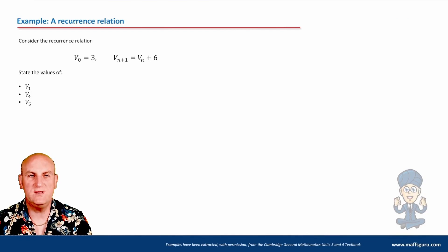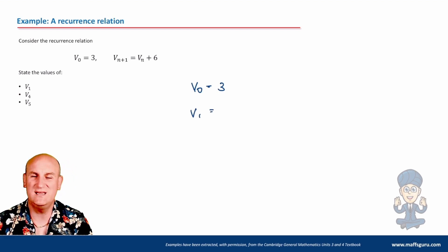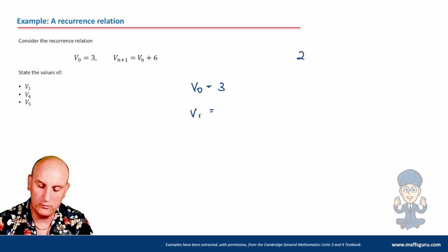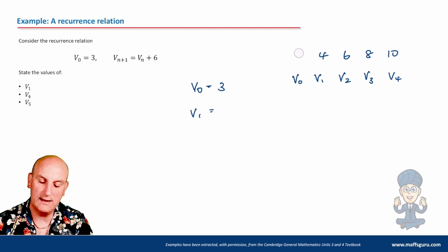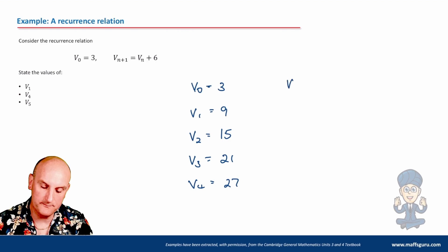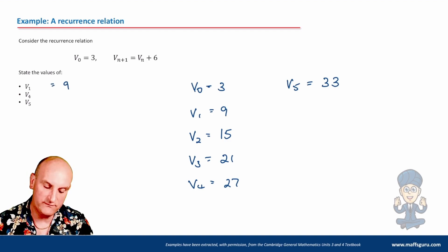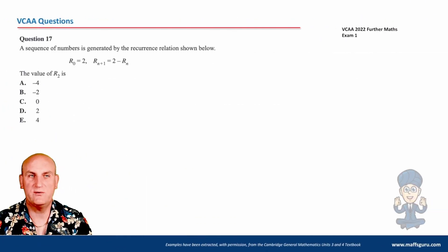Consider the recurrence relation shown. State the values of V1, V4, and V5. We've got V₀ equal to 3. Each term has a number — so if I've got the sequence 2, 4, 6, 8, 10, that would be V0, V1, V2, V3, V4. V1 is the next number in the sequence. Take the current number and add 6: that's 9. Then V2 is 15, V3 is 21, V4 is 27, V5 is 33. So: V1 is 9, V4 is 27, and V5 is 33.